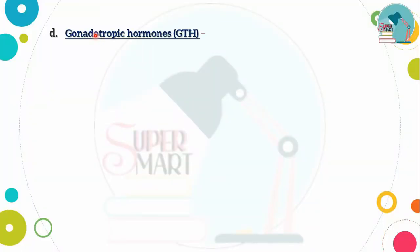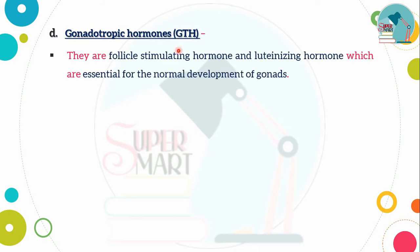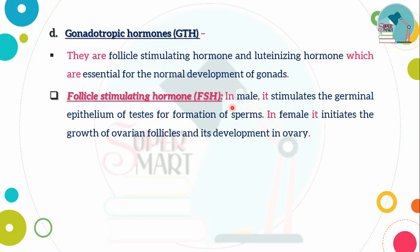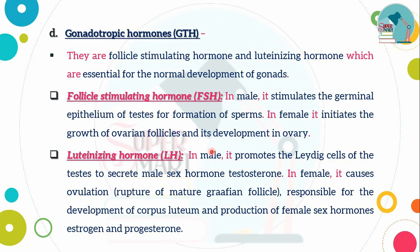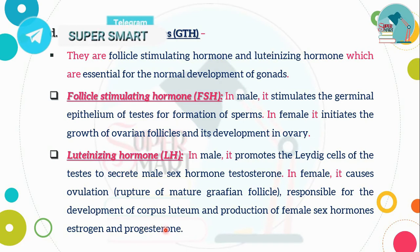Next is gonadotropic hormone (GTH), which stimulates male and female reproductive organs. It segregates two hormones: follicle stimulating hormone (FSH) and luteinizing hormone (LH). FSH initiates sperm formation in males and stimulates ovary follicle growth and development in females. LH initiates testosterone secretion in males and stimulates ovulation and progesterone development in females. Together, they produce male and female sex hormones.